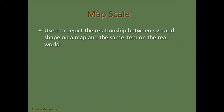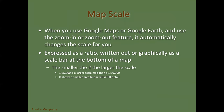Map scale is pretty important. It depicts the relationship between size and shape on a map versus the same item in the real world. If you use Google Maps or Google Earth, it's that little scale you see at the bottom right. It can be expressed as a ratio. 1:25,000 is a larger scale map than 1:50,000 because it shows a smaller area in greater detail.